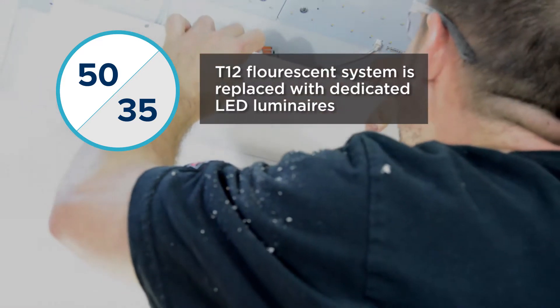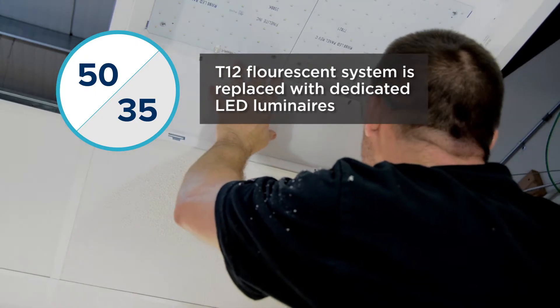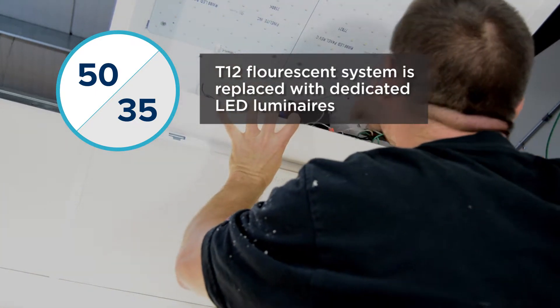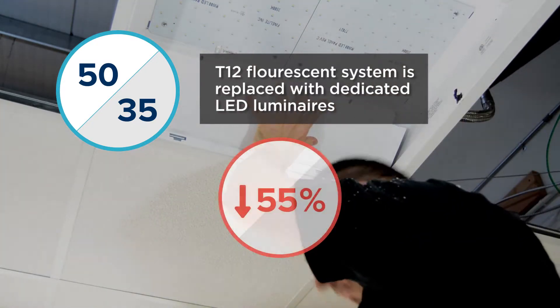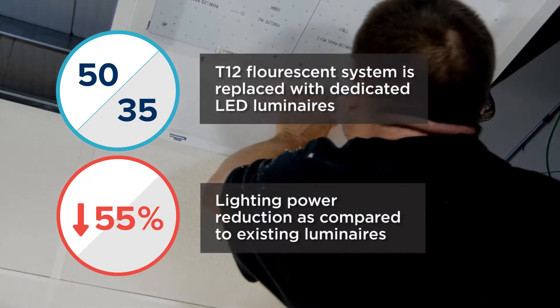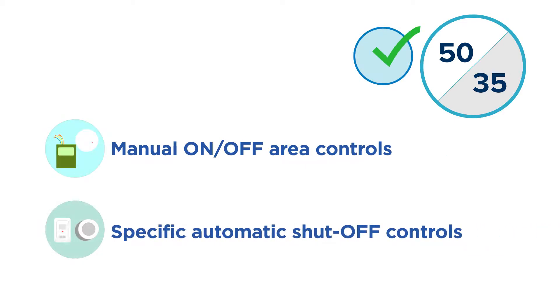Now let's look at an example of an entire luminaire alteration project that can use this compliance path. A retail business owner replaces all the existing T12 fluorescent troffers on the main sales floor with dedicated LED luminaires, thereby reducing the rated power of installed luminaires by 55%. This project meets the criteria of the new power reduction compliance path, assuming that the retrofit complied with the necessary manual on-off control and automatic shutoff control requirements. For this compliance path, the existing luminaire power must be documented to verify that the replaced or modified luminaires achieve the specified power reduction.